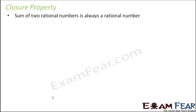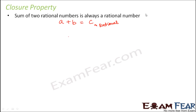As per the closure property for addition, it says that the sum of two rational numbers is always a rational number. So if A and B are two rational numbers, then the sum of A and B will always be a rational number. Therefore we say that rational numbers are closed under addition. Closed means they do not allow any other type of number — two rational numbers add to form a rational number again, so they remain closed within their set.